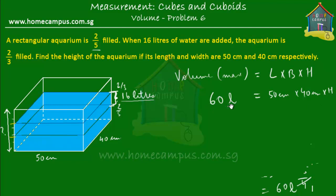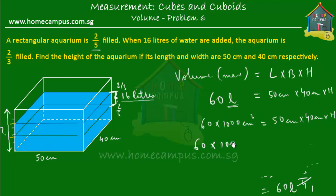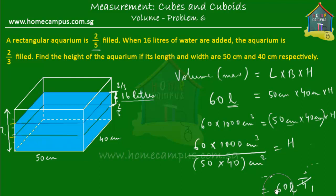Now, how do we convert 60 liters to cubic centimeters? One liter equals 1000 cubic centimeters, so 60 liters equals 60 times 1000 cubic centimeters. Setting up the equation: 60,000 cm³ = 50 cm × 40 cm × height. Dividing both sides by 50 × 40 gives us the height.